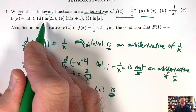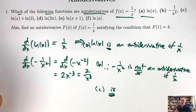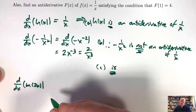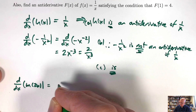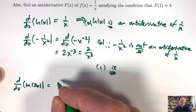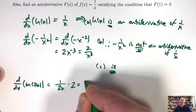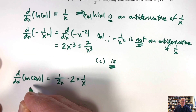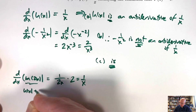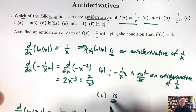What about choice D — natural log of 2x? It might not look like it, but choice D is an antiderivative. The derivative of ln(2x) can be found with the chain rule: the inside function is 2x, the outside is ln(x). You get 1/(2x) times 2, and the 2s cancel, leaving 1/x. Alternatively, ln(2x) = ln(x) + ln(2), and ln(2) is a constant, similar to choice C. So D is an antiderivative.